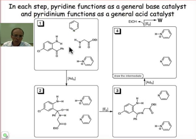In just about every one of these steps, in fact, you're going to see that we always start our curved arrows from the general base and we always end our curved arrows by depositing an electron to the general acid.